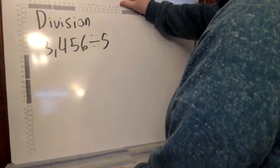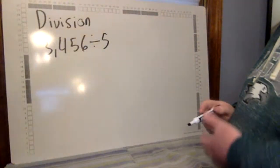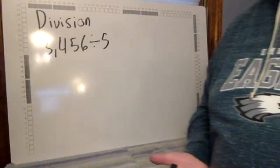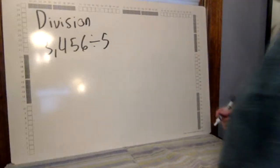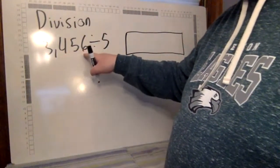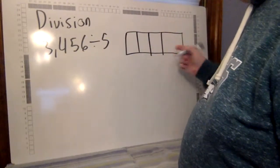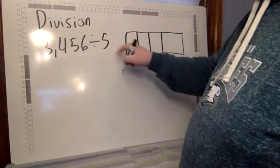Now I'm going to do the same question using my favorite way of doing division, called the bring-up method. I learned this from some friends a few years ago and I really like it because it keeps all my answers neat and tidy. Same idea, but I'm going to make a box. I have 4 digits that I'm dividing, so I make 4 boxes and put my 5 on the side, then write 3, 4, 5, 6 in the boxes.